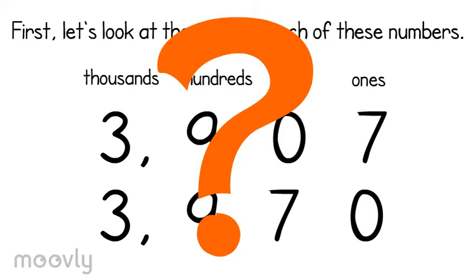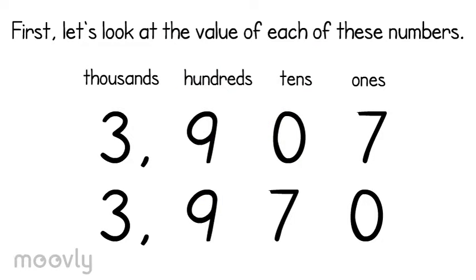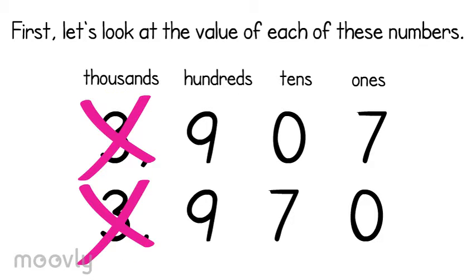When comparing numbers, which place value is the most important? That's right, the thousands place. So, let's look at the thousands place of each of our numbers. My first number has 3 thousands. My second number has 3 thousands. They're equal. This isn't going to help me compare the numbers. I have to go on.